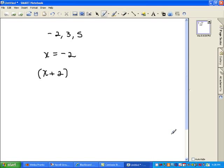If we're using the zero of 3, we have a factor of x minus 3. It's just the opposite. And for the 5, we have x minus 5.